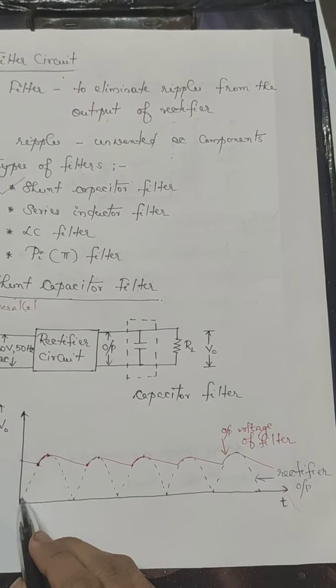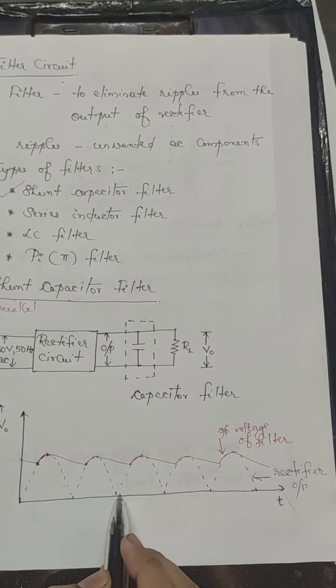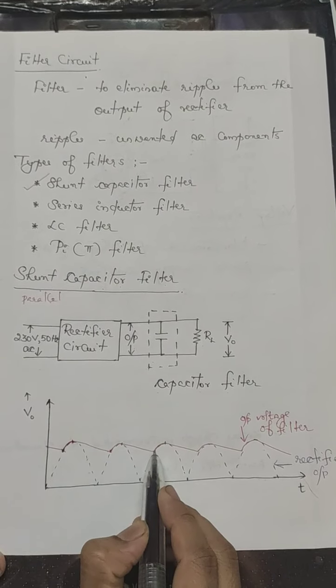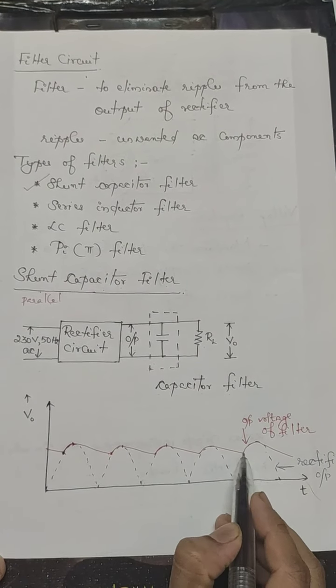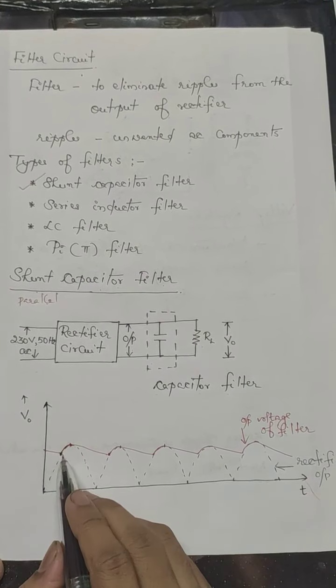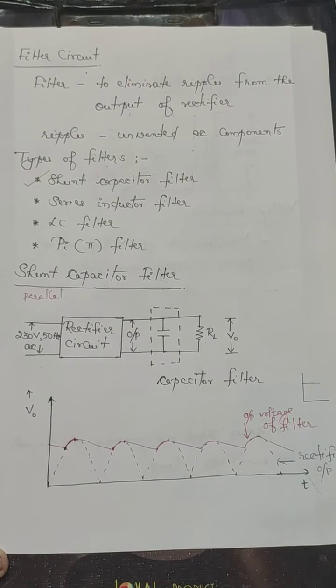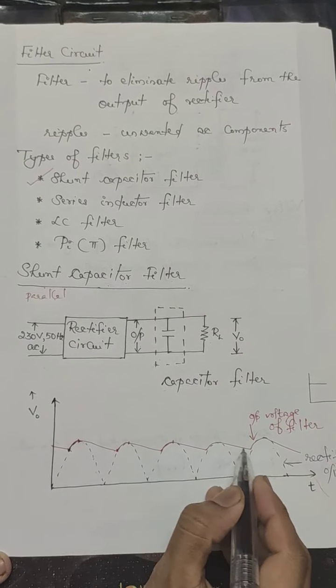We can see that the rectifier output is a pulsating DC waveform. Whereas, we get a more constant waveform at the output of the filter. But it is not constant. It is not completely constant. But it is fluctuating in nature.